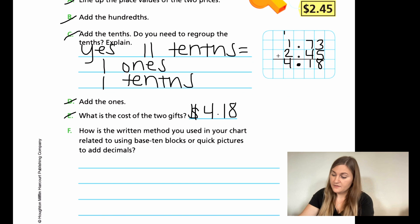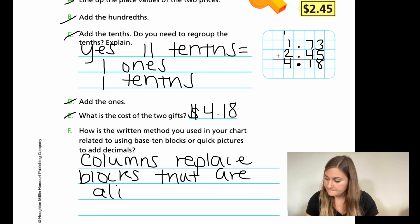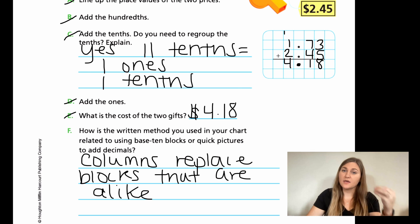It says, F, how is the written method you used in the chart related to using base 10 blocks or quick pictures to add decimals? Well, they're pretty similar. In base 10 blocks, you still have to use the same blocks within the same place value. In here, we're just using a column to replace the picture. So I'm going to go ahead and say that the columns replace blocks that are alike. Because if I were adding hundreds, I would want to add hundreds with hundreds where in the written number method, this just takes the column and takes place of that. Let's go ahead and flip the page.